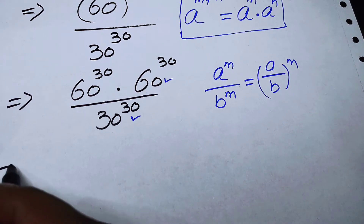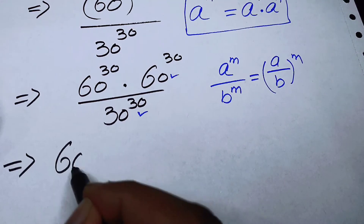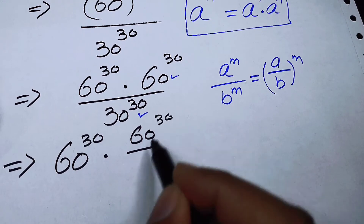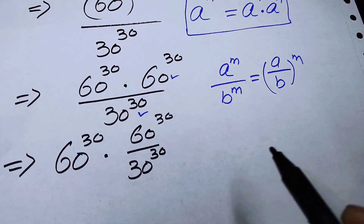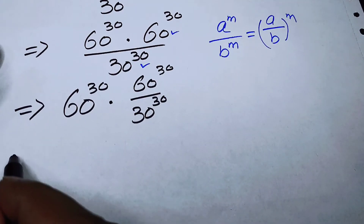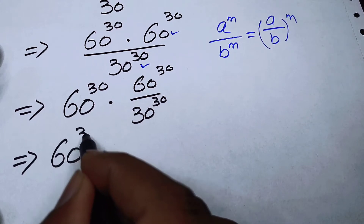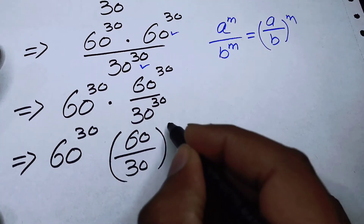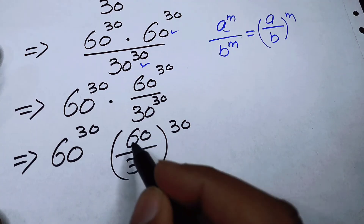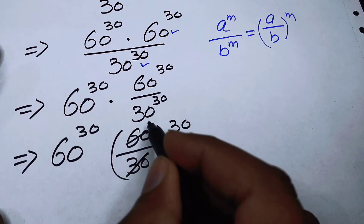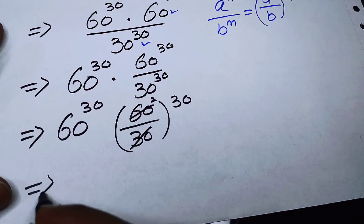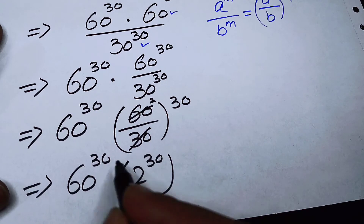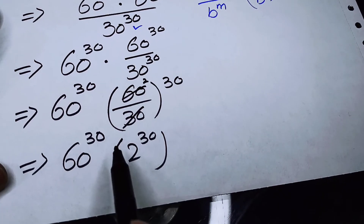We apply this law to the terms 60 to the power of 30 and 30 to the power of 30, since their exponents are the same. This gives us 60 to the power of 30 times (60 over 30) to the power of 30. We can cancel: 60 divided by 30 equals 2, so we get 60 to the power of 30 times 2 to the power of 30.